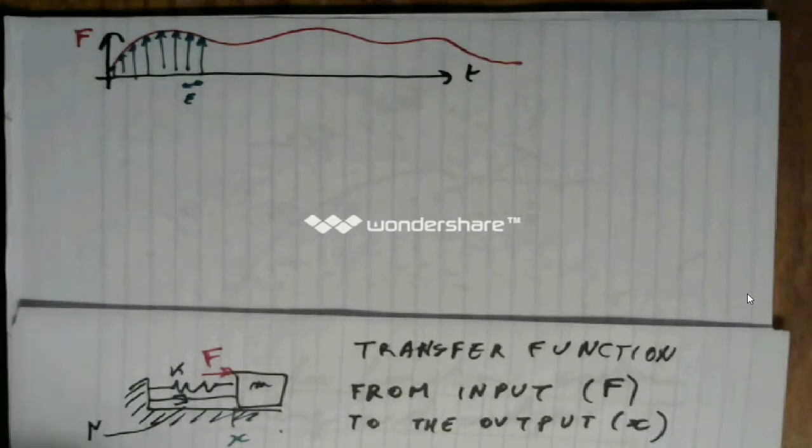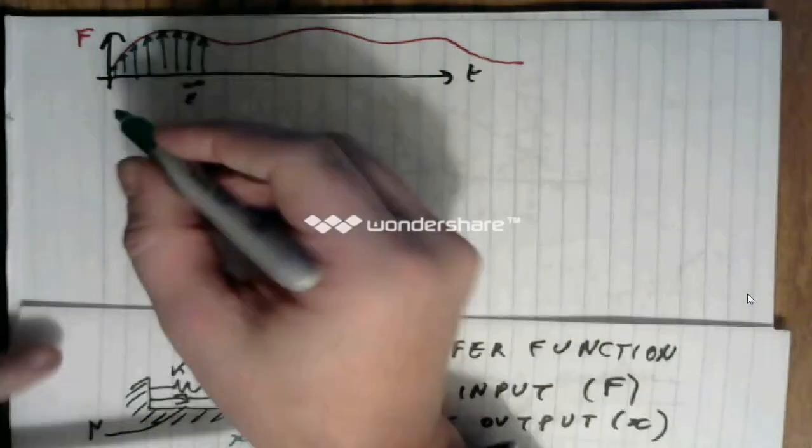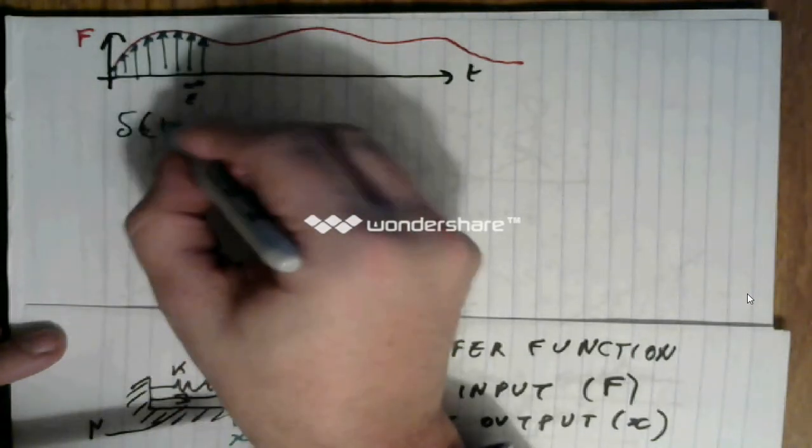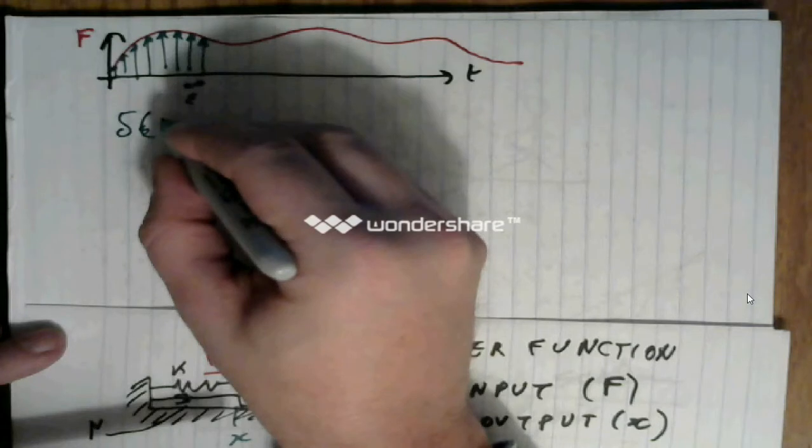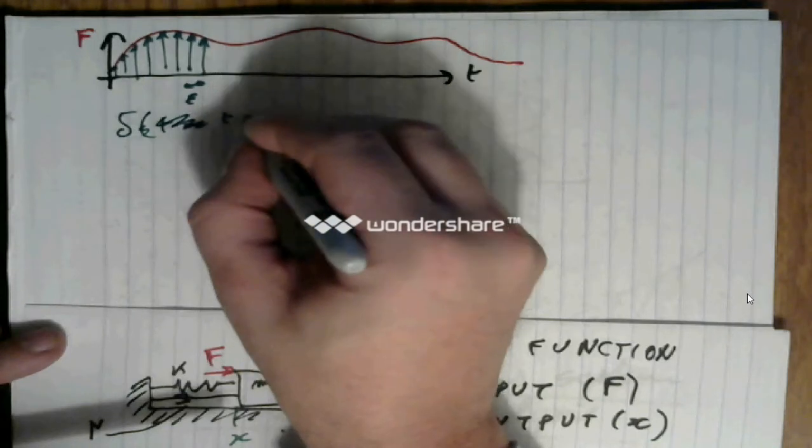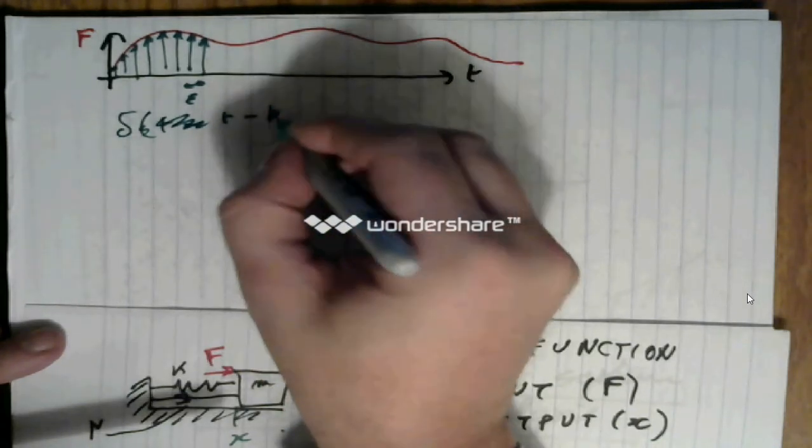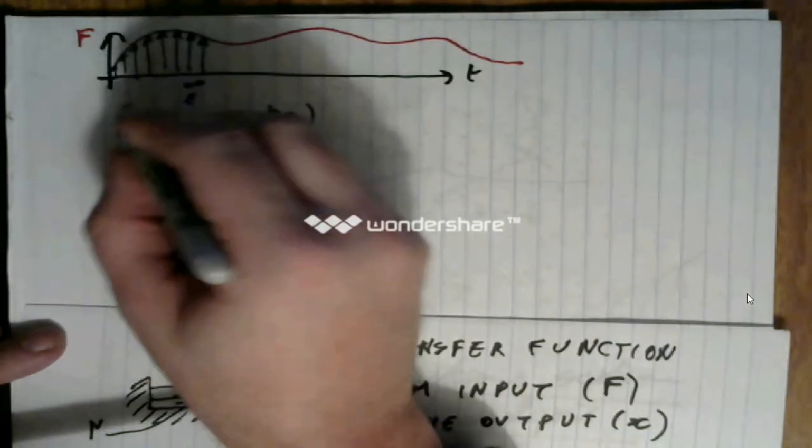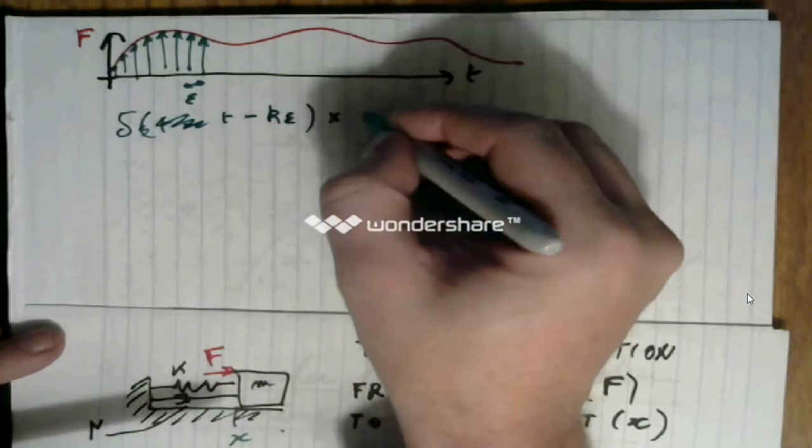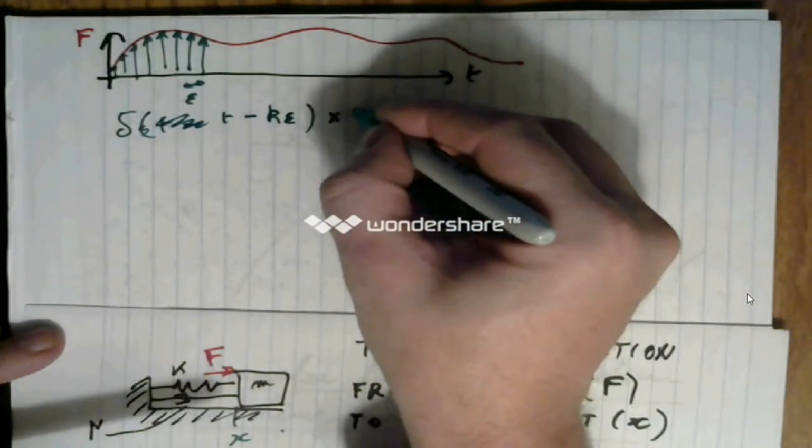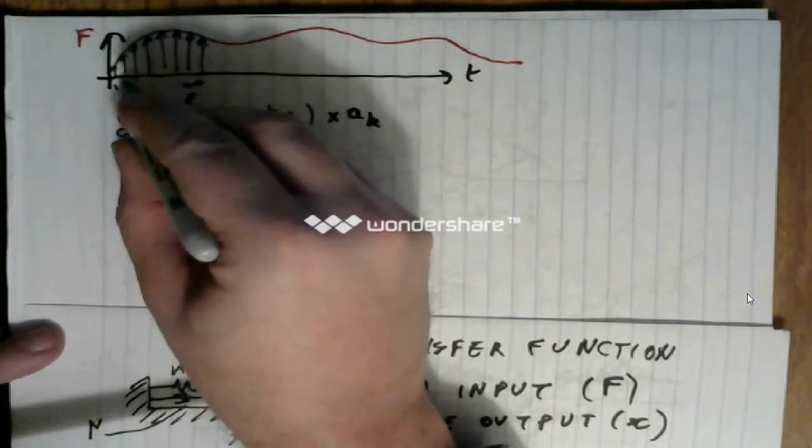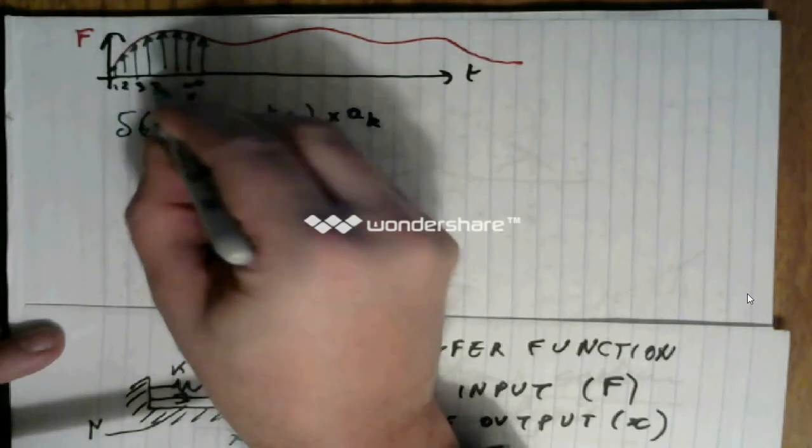So, as I said, these are little deltas of t minus k times epsilon, multiplied by some number, multiplied by, I would call that a sub k. That would be the first impulse, the second impulse, the third impulse, the fourth impulse, etc.